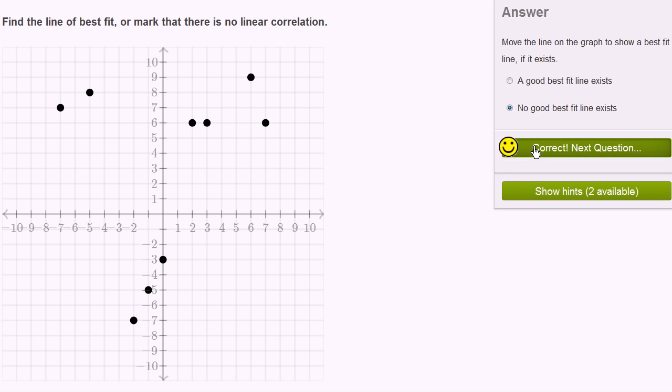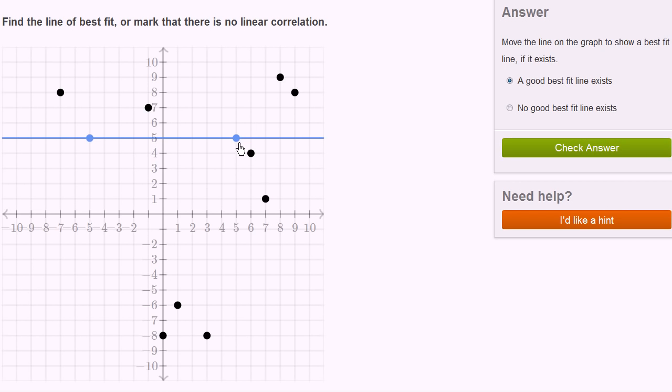Let's try a couple more of these. Find the line of best fit. Well, this feels very similar. It really feels like there's no, I mean, I could do that, but then I'm ignoring these two points. I could do something like that, but then I'd be ignoring these points. So I'd also say no good best fit line exists.